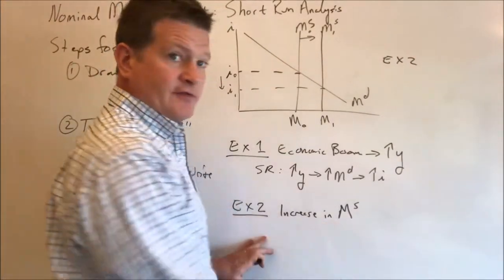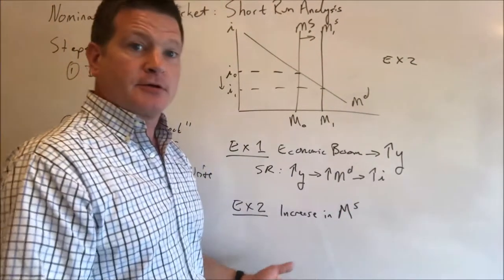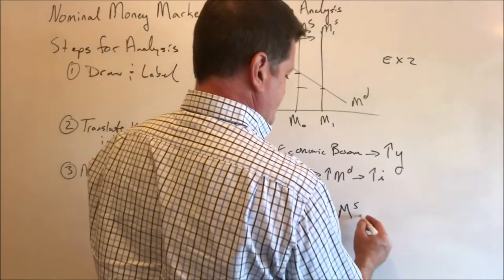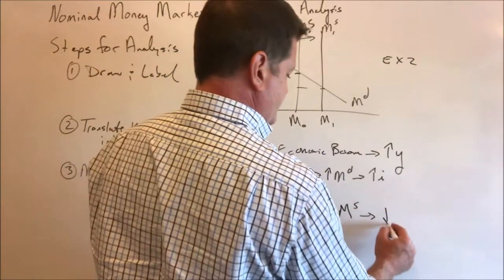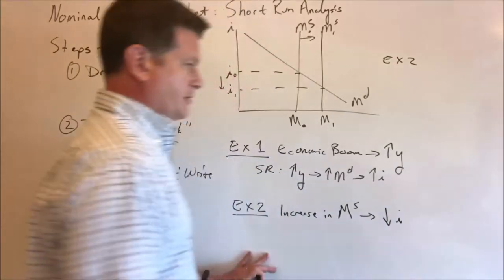This is a direct effect. Increasing the money supply just increases the money supply. This has a direct effect of pushing down the nominal interest rate.